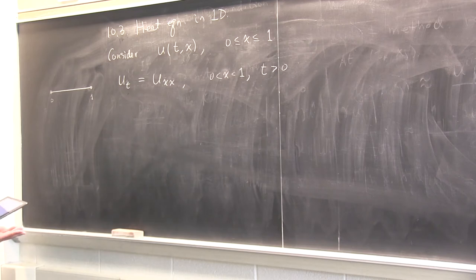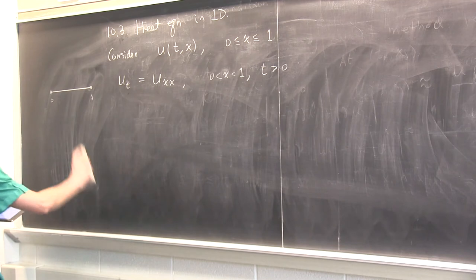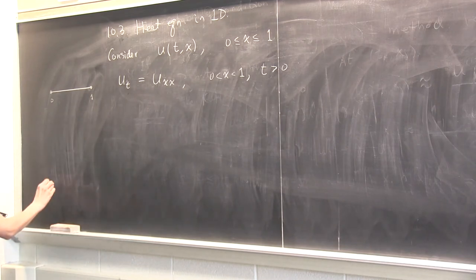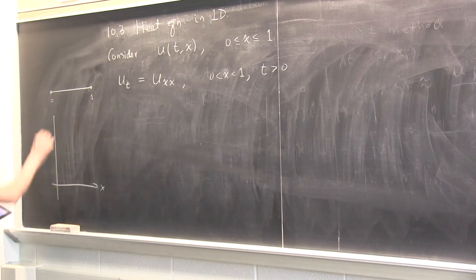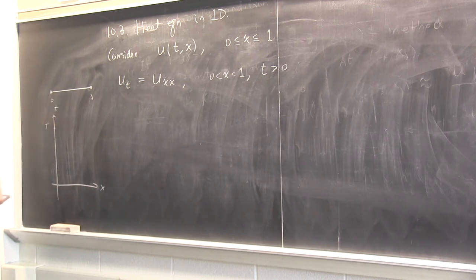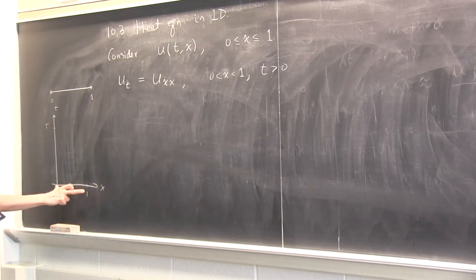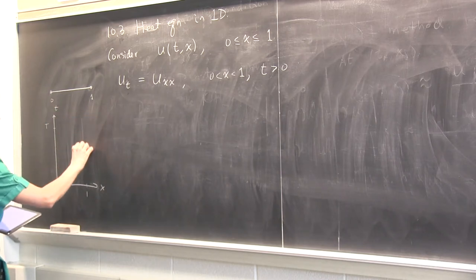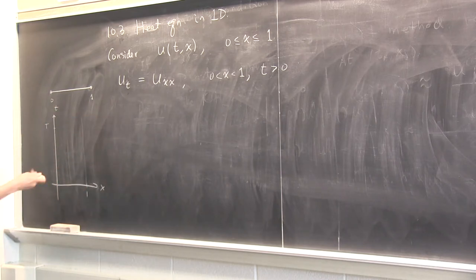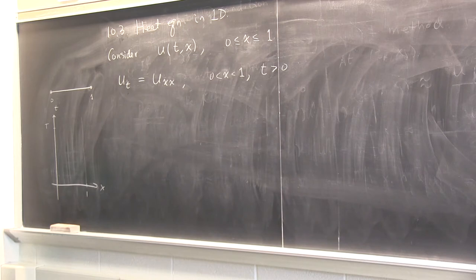There are initial conditions and boundary conditions. I'm going to solve this equation here. This is x, this is T; there is a final computing time where I will stop my computation, and x goes from zero to one. That's my stick, and I want to see its temperature in time. I'll be solving forward in time how the temperature changes, with boundary conditions fixed.